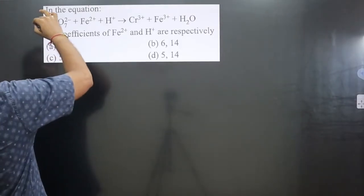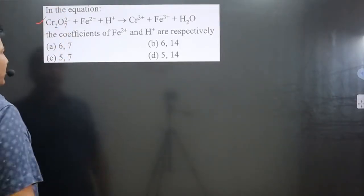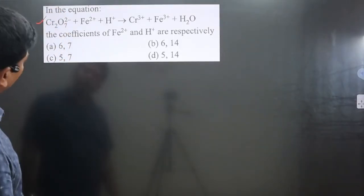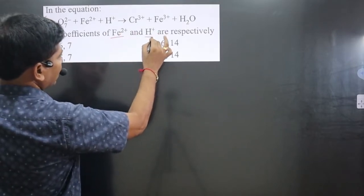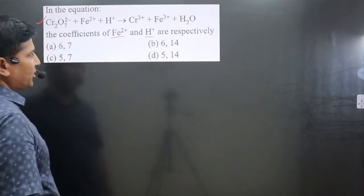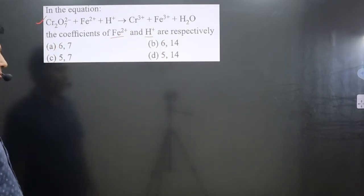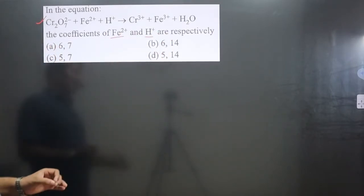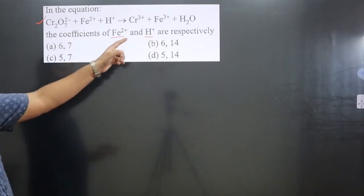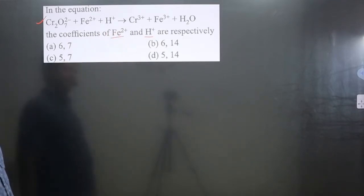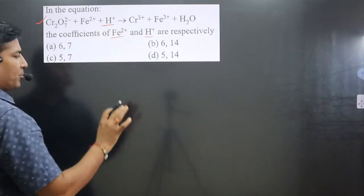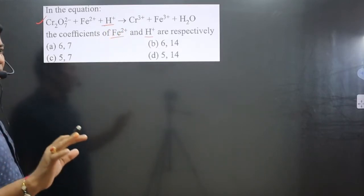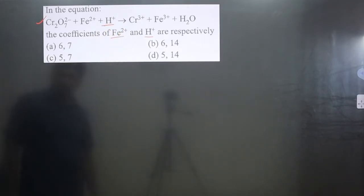The question gives an equation and asks for the coefficients of Fe2+ and H+ respectively. We can balance this equation to find the coefficients. Keep in mind that H+ is given in the equation, which means the equation is balanced in acidic medium.